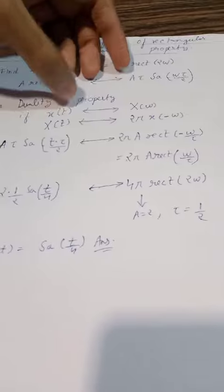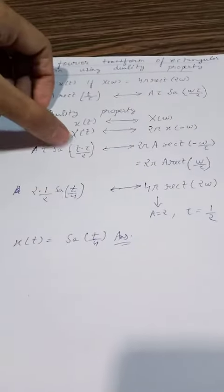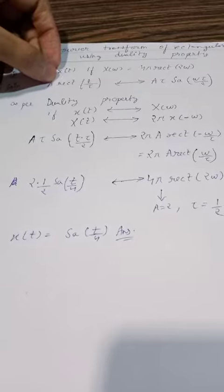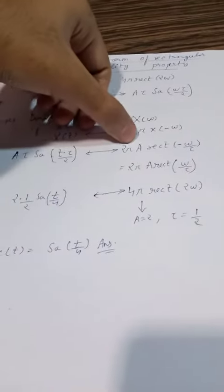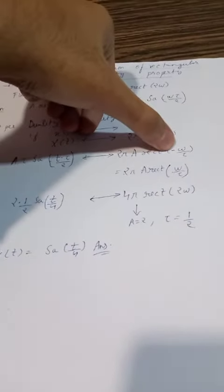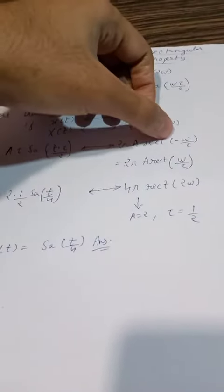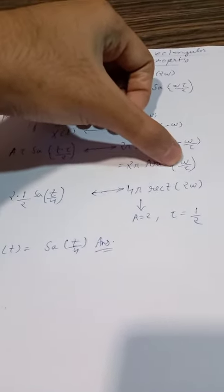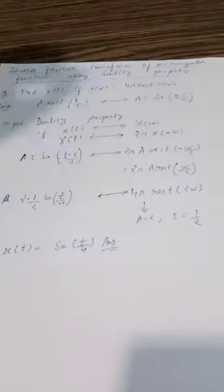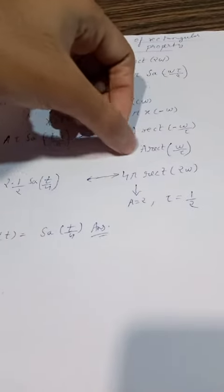Applying duality: replace ω with t in the transform, then multiply by 2π and replace t with minus ω. This gives 2π·a·rect(−ω/τ). Since the rectangular function is an even function, rect(−ω/τ) = rect(ω/τ), so the result is 2π·a·rect(ω/τ).